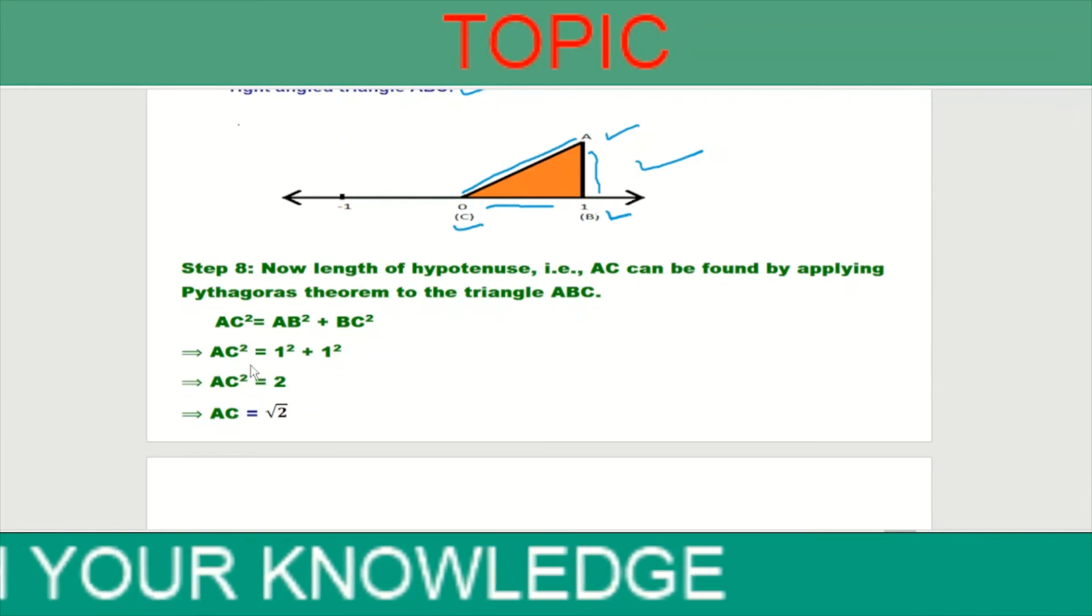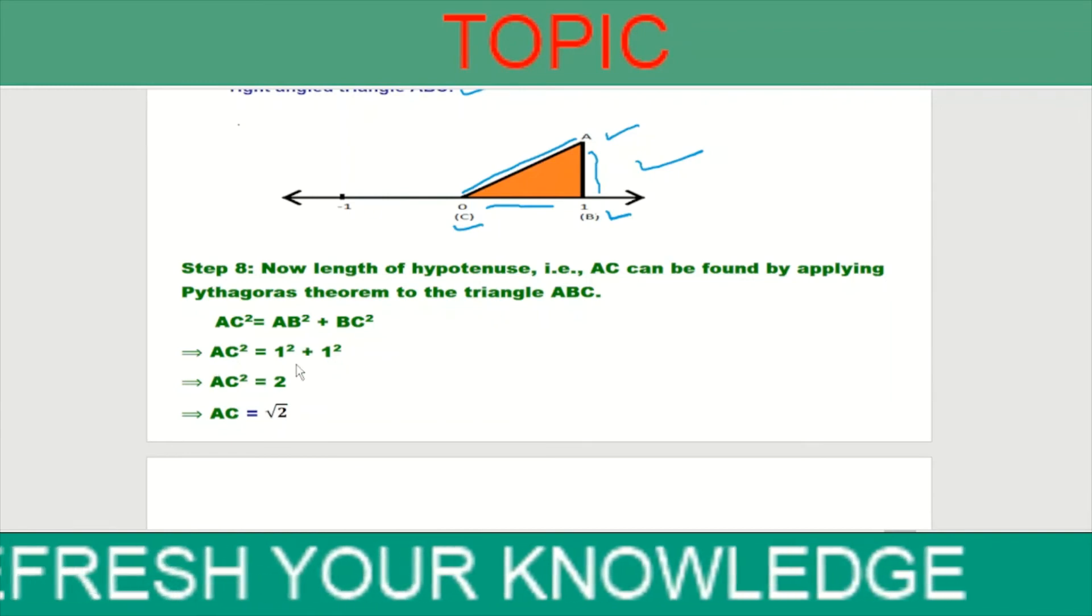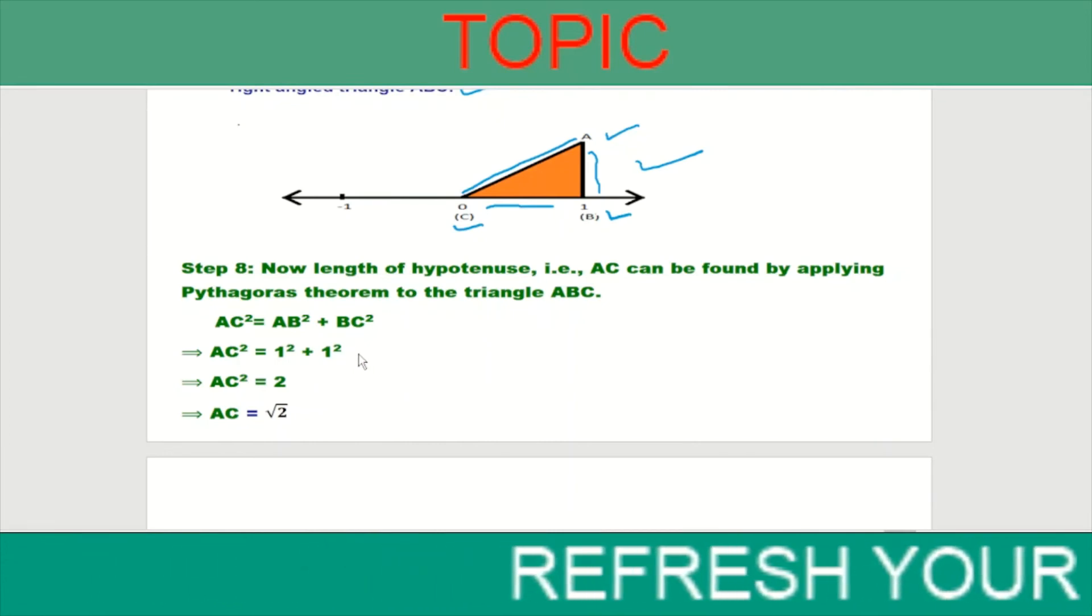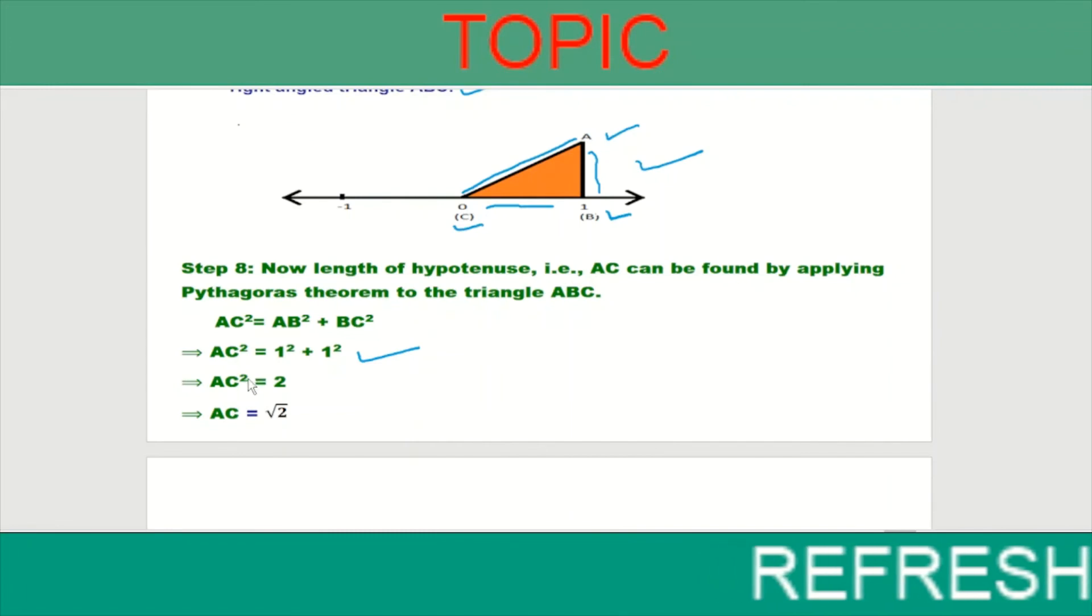AC squared, because we have taken AB as 1 unit and BC as 1 unit. So here AC squared equals 1 squared plus 1 squared. That means AC squared is equal to 2. Then AC is equal to root 2.